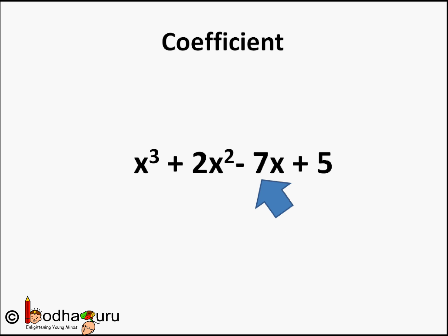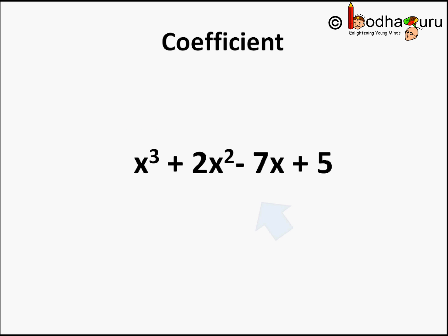Every term of a polynomial has a coefficient. A coefficient is a numeric or constant quantity placed before the variable and multiplied with it. Like in the polynomial x cubed plus 2x squared minus 7x plus 5 — the coefficient of x cubed is 1, since 1 multiplied by any variable equals that variable. The coefficient of 2x squared is 2. The coefficient of minus 7x is minus 7, and so on.